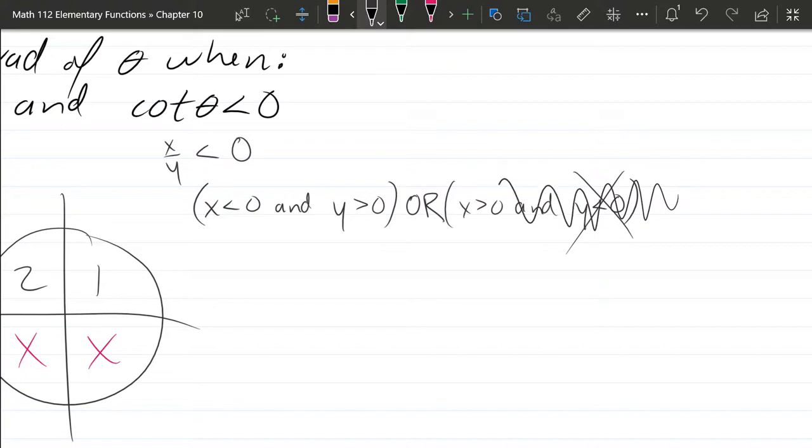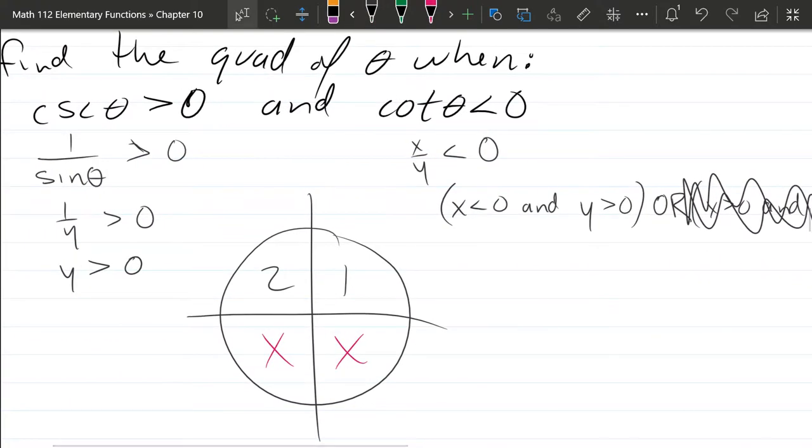So we're crossing out this possibility, and we're left with only x is negative and y is positive. So x is negative puts us in quadrant 2.